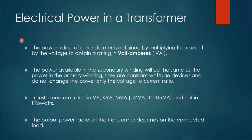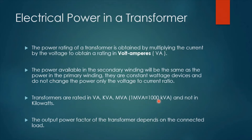Regarding electrical power in a transformer: the power rating of a transformer is obtained by multiplying the current by the voltage to obtain a rating in volt amperes (VA). The power available in the secondary winding will be the same as the power in the primary winding. They are constant wattage devices and they don't change the power, only the voltage to current ratio. The power will remain constant but the voltage will change from the primary to secondary transformation. Transformers are rated in volt amperes, kilovolt amperes, or megavolt amperes — noting that one megavolt ampere equals 1,000 kilovolt amperes — and they are not rated in kilowatts.